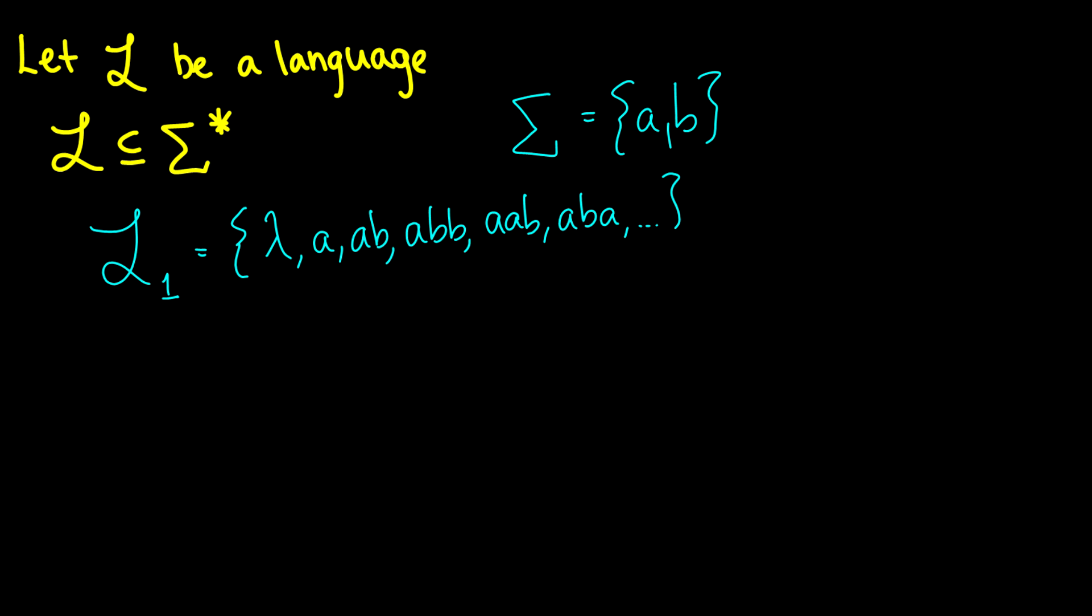So we can write this as the set of, let's call it strings, actually we shouldn't call it strings. Standard notation is w for, I guess we call it a word, where w begins with an a. So we can have a language like that. Perhaps we want a language too, which should not include lambda, should not include the empty character in that case.